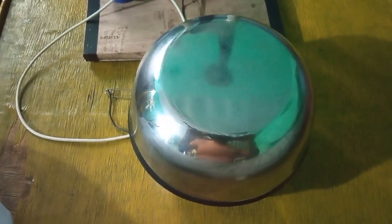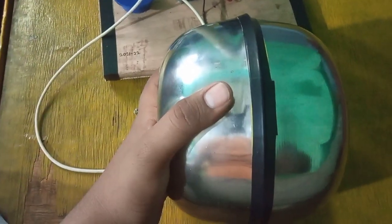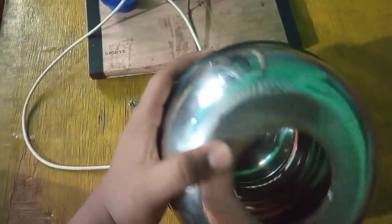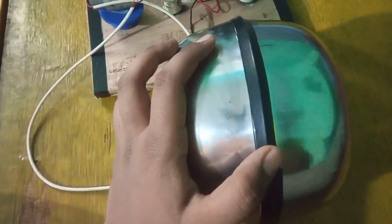Now this is the heart of my Van de Graaff generator. It is my shell. I had used two smoothly curved bowls for the purpose. As we can see, it is totally hollow from inside.